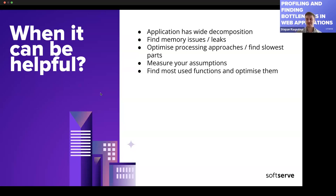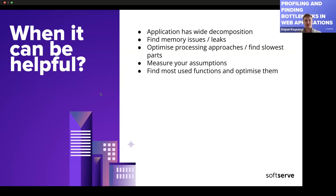Another use is understanding how your project itself is used — which functions are called the most. They might not be slow, but if you know they're the most-used, you can optimize them specifically. For example, if it's a key part of your project, you might consider rewriting it in a different language.